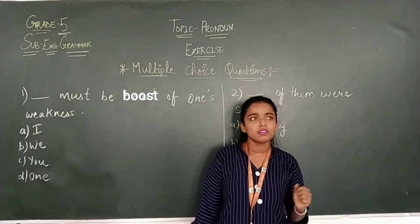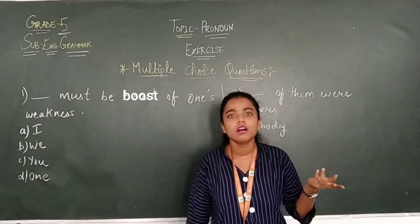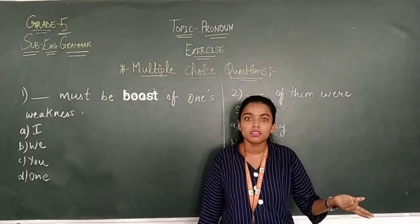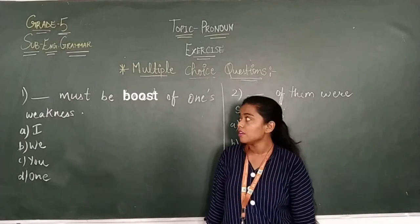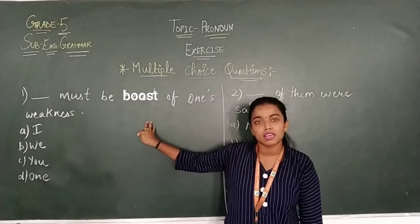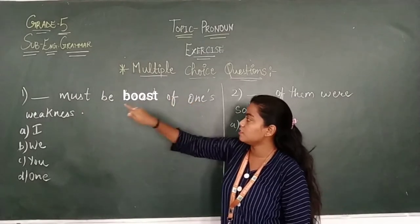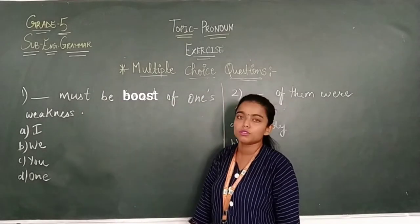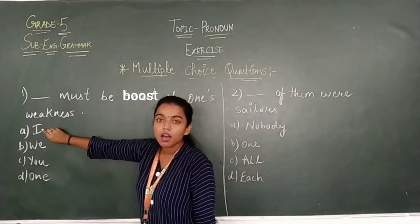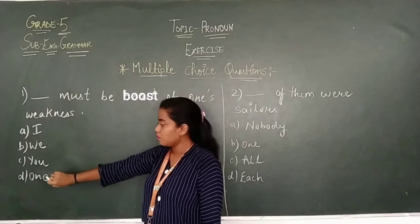So different pronouns are there: I, me, you, with, her, than, they, us. There are many pronouns which I have explained to you. So now, we will know in the exercise form. Dash must be boost of one's weakness. So what we will know is the answer, how many pronouns are in the options? I, the, you and one.